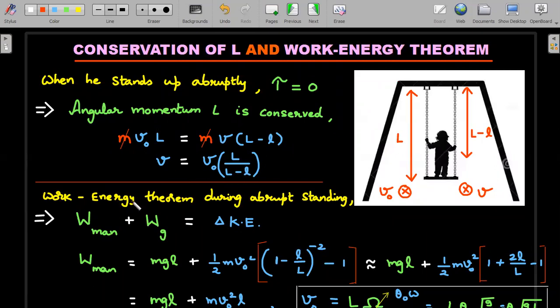Work-energy theorem during the abrupt standing - I'm using work-energy theorem again for the same period where this angular momentum conservation was applied. Work done by man, internal forces of the person, plus work done by gravity on the system should be change in kinetic energy. This is nothing but writing W_all equals delta KE.